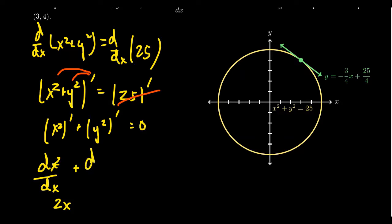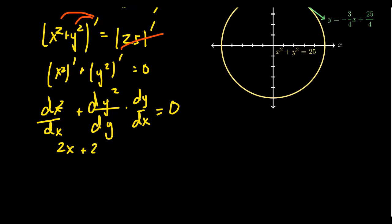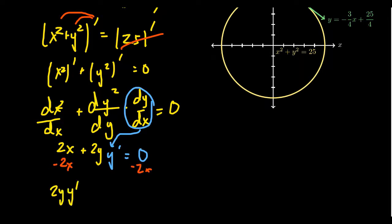The derivative of x squared with respect to x gives you 2x. The thing that's different with implicit differentiation is when you take the derivative of y squared with respect to x — you use the chain rule. Instead of differentiating with respect to x directly, you take the derivative with respect to y and multiply by dy over dx, the inner derivative. So the derivative of y squared with respect to y is 2y, and you must include that inner derivative dy/dx — the most common mistake students make is forgetting it.